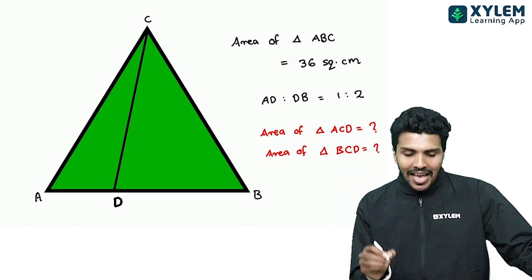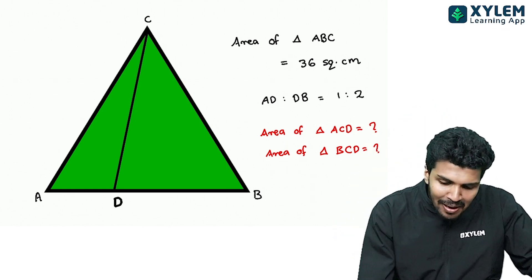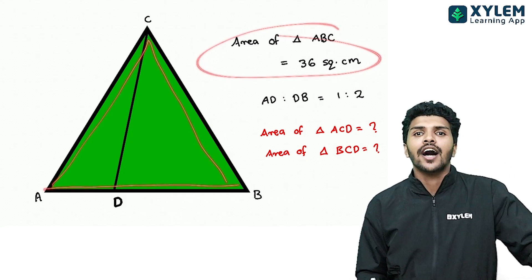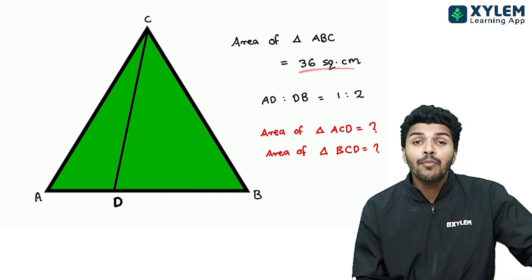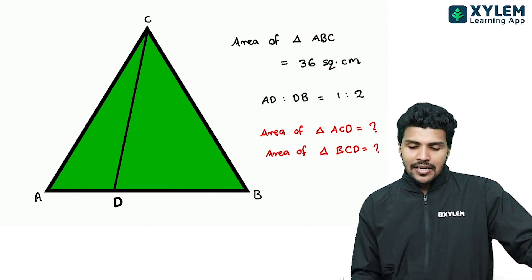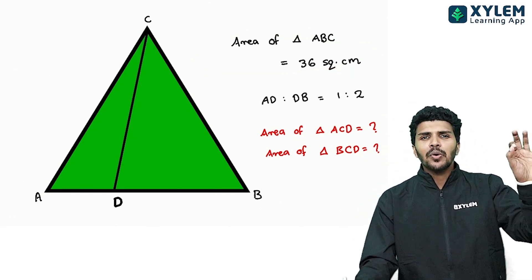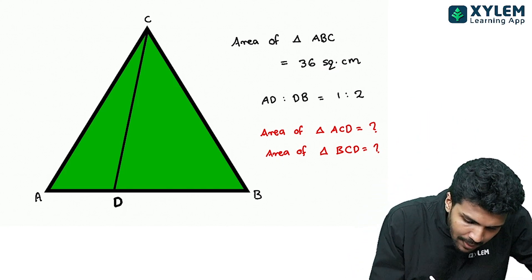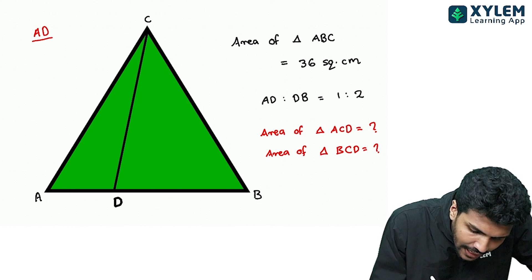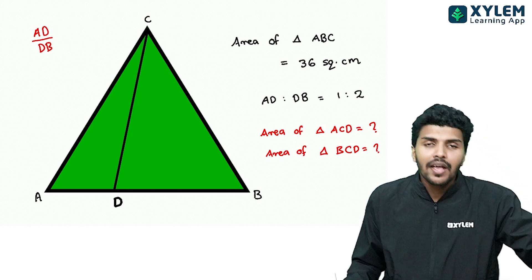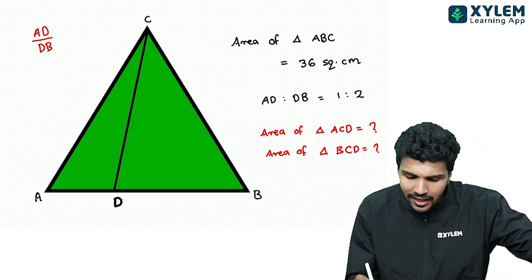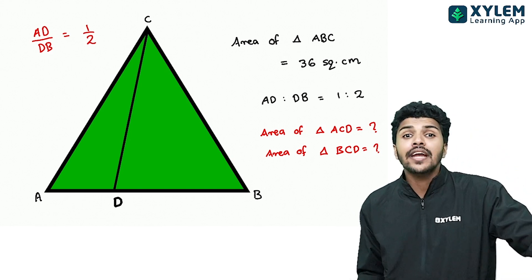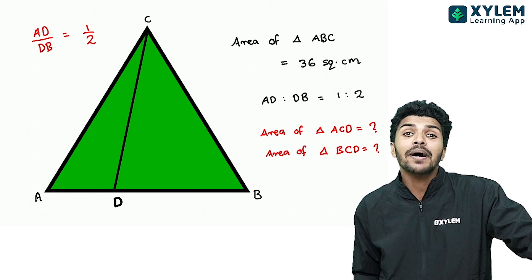This is Triangle A, B, C. Triangle ABC has an area of 36 cm². AD is to DB — that is, AD by DB is equal to 1 by 2.